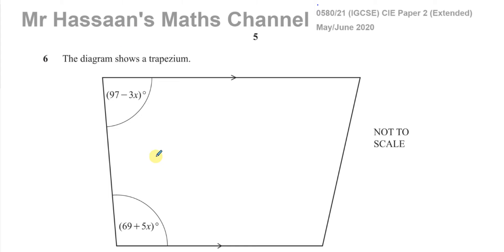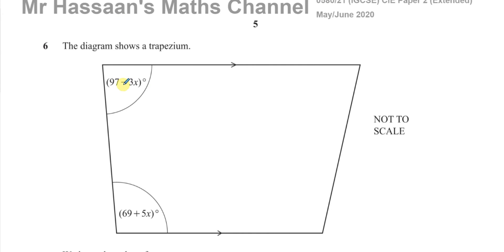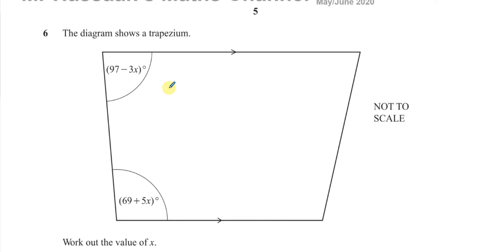They've given us a couple of angles in the trapezium and they've asked us to find the value of X. So a trapezium is a quadrilateral, a four-sided figure, which is special because it has one pair of sides which are parallel. We can see those are the pair of sides which are parallel because of the markings on the lines.